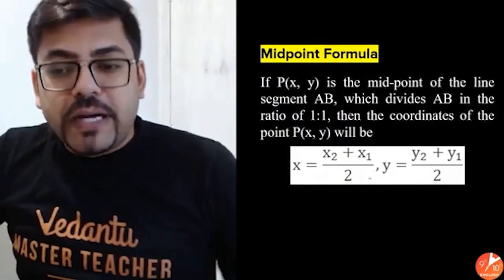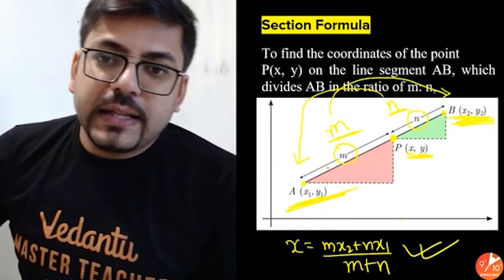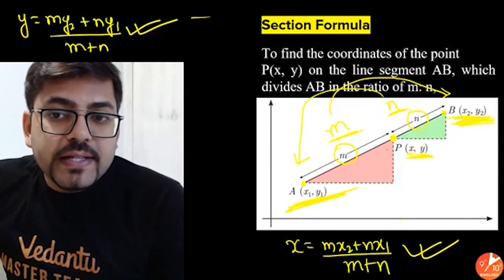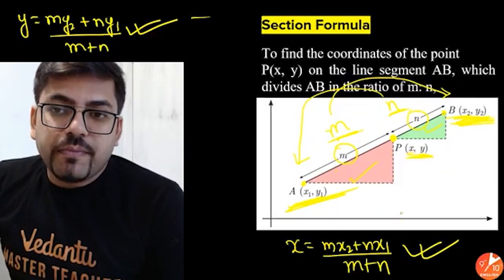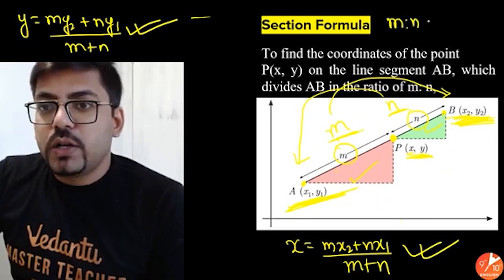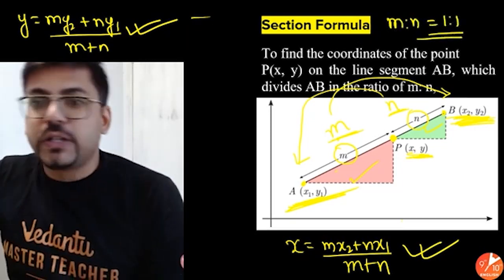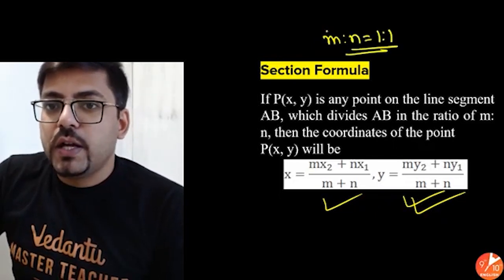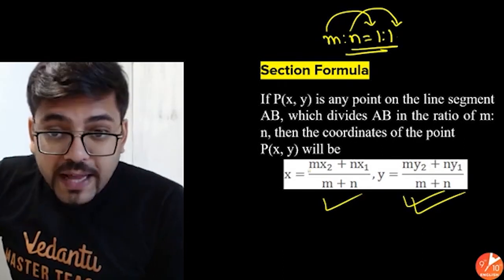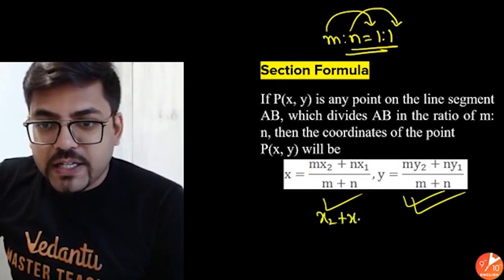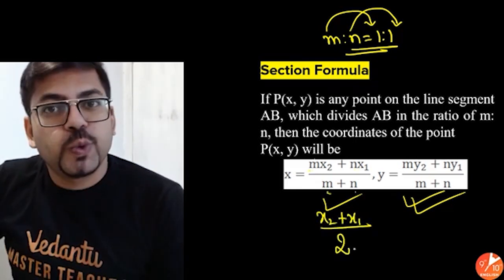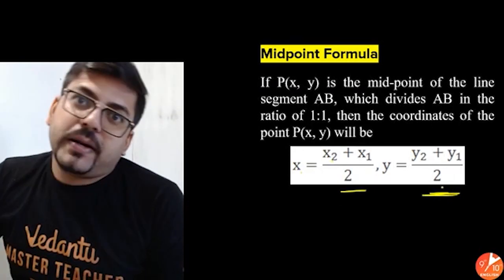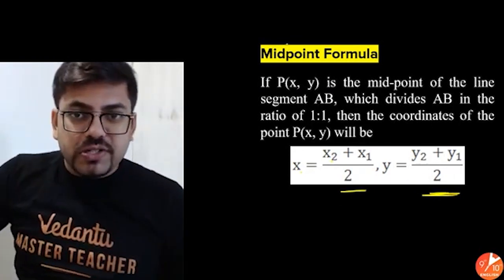And this is the midpoint formula. Now what is midpoint? Simple: if you have to find the midpoint, if you have the ratio M is to N, midpoint simply means that both parts would be equal. This part and this part would be equal, meaning M is to N should equal 1 is to 1. So M will be 1 and N will be 1. If you put M and N both as 1, you get X2 plus X1 over 1 plus 1, which equals 2.